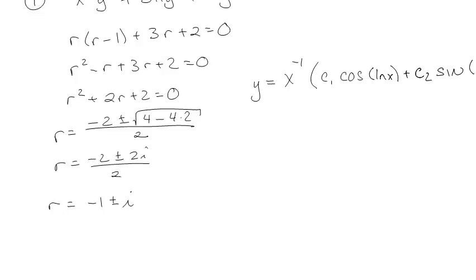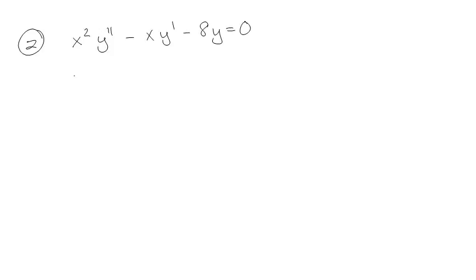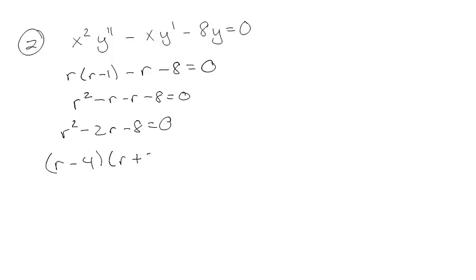So let's keep going. I've got r(r-1) minus r minus 8, so r² minus r minus r minus 8, r² minus 2r minus 8. And that's some other kind of answer. What would that be? That's (r-4)(r+2), so r equals 4 or minus 2.